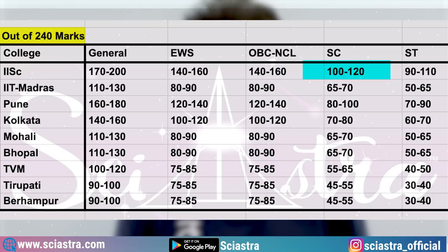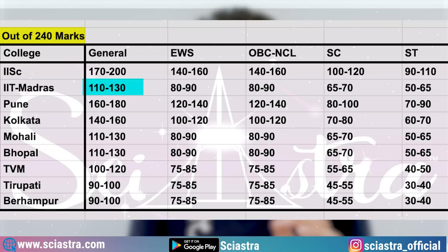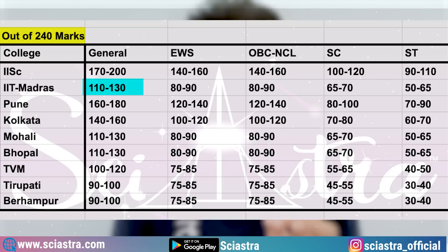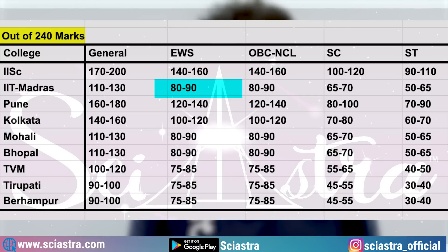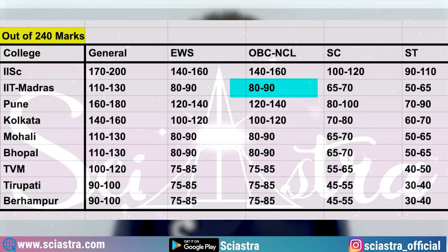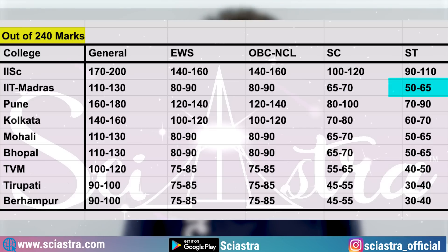For IIT Madras: General 110–130, EWS 80–90, OBC NCL 80–90, SC 65–70, ST 50–65. And for IISc Bangalore ST category: 90–110.